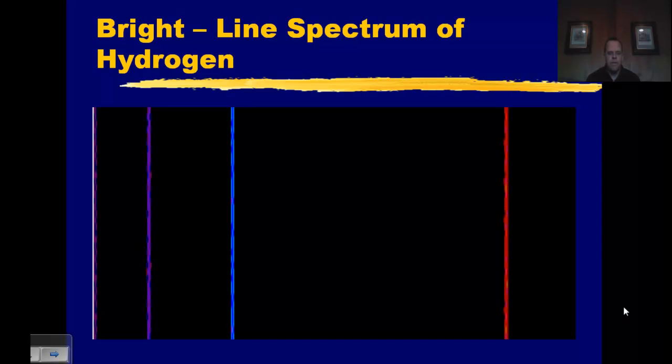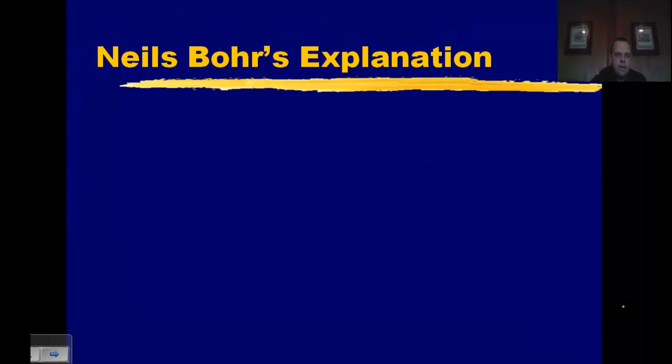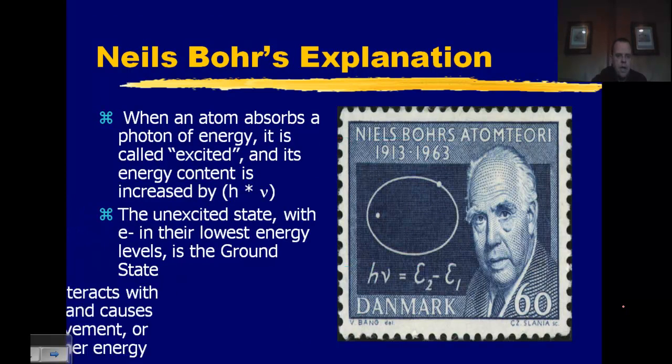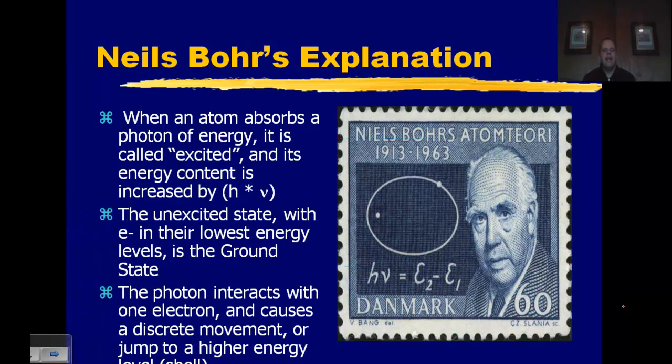You don't see everything all the way from indigo and violet down to red with all possible colors. You only see very specific bands. This is due to the structure of the atom that Bohr postulated as part of his theory. Now in Niels Bohr's explanation, Niels Bohr was a Danish scientist, he said that an atom can absorb photons of energy and become excited.